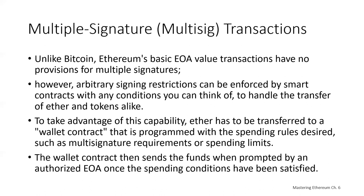Finally, let's talk about multi-signature or multi-sig transactions. In Bitcoin, it's possible to create a multi-signature transaction that can only spend funds when multiple parties sign — for example, two of two where both parties must sign, or two of three where any two of three parties must sign. Ethereum's basic externally owned account value transactions don't have built-in provisions for multi-sig the way Bitcoin does.